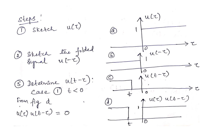We solve this by sketching graphs and computing y(t). The first step is sketching u(τ): the unit step signal with dummy variable τ, equal to 1 for all τ ≥ 0 and 0 for τ < 0. This gives us figure (a), a graph of u(τ) with amplitude 1. The second step requires computing u(−τ).